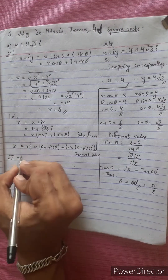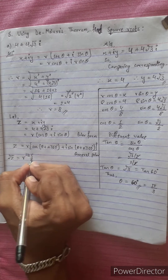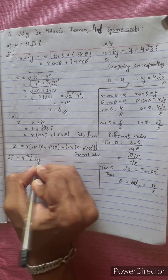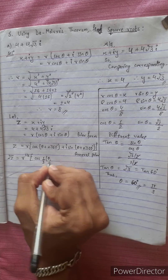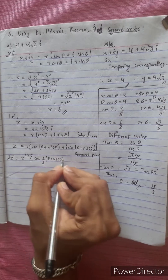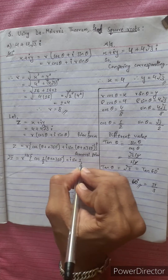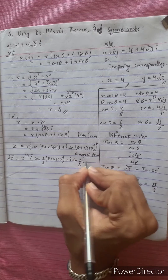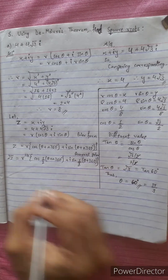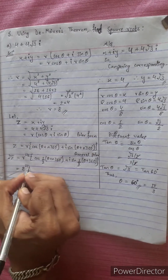To find the square root, we apply the formula: square root of z equals R to the power 1 by 2 times cos(theta plus n times 360 divided by 2) plus i sin(theta plus 360 divided by 2). R to the power 1 by 2, which is 8 to the power 1 by 2.